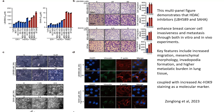In panel B, researchers used a transwell breast cancer cell migration assay to measure how HDAC inhibitors impact cell motility. After treatment with LBH589 or Saha, they observed a significant increase in cell migration compared to the control group. These results suggest that these inhibitors enhance breast cancer cell migration, which is a key step in metastasis.